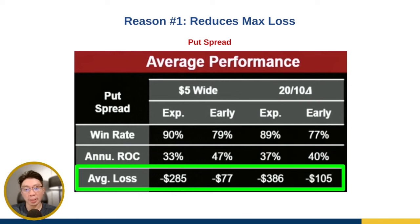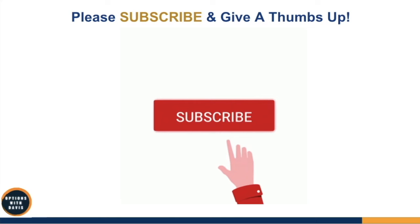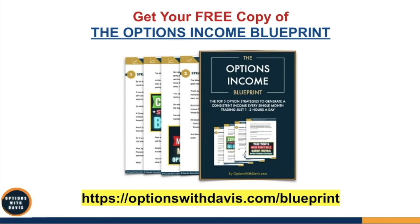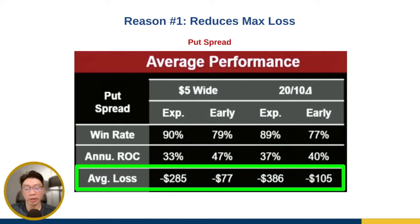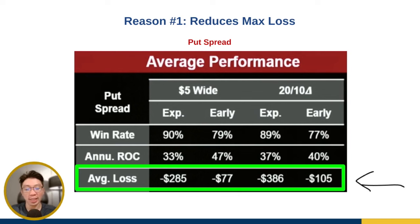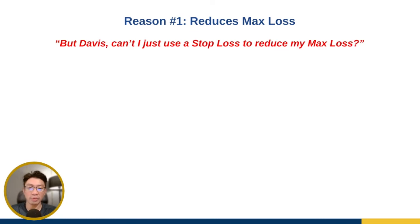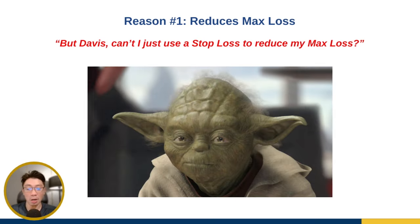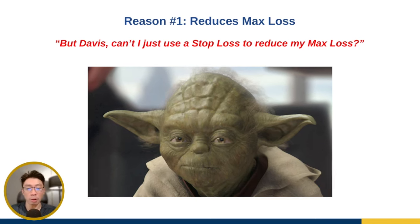Now what about credit spreads — in particular, the put credit spread or the bull put spread? You might be asking: can I just use a stop loss to reduce my max loss? The Tasty Trade team did extensive studies comparing the performance of holding to expiration versus using a stop loss to exit your trade. For the strangle, if you have a stop loss at 2x — meaning if your credit received is $1, the stop loss is placed at $2 — holding to expiration over a 10-year study dating back to 2006 actually does better compared to using a stop loss.